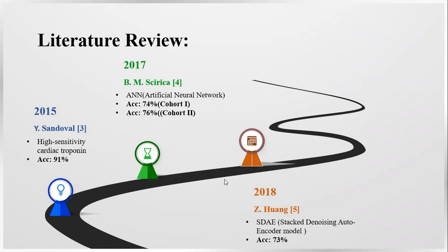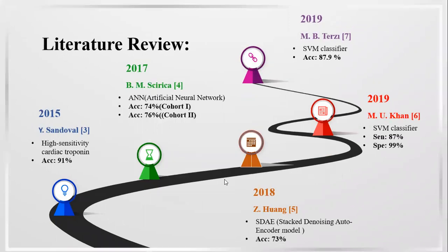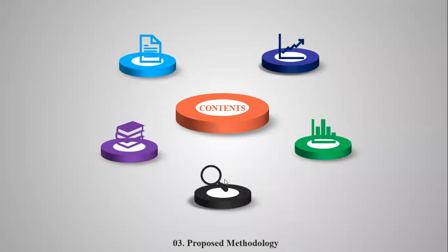In 2018, stacked denoising autoencoder model was used that led to an accuracy of 73%. In 2019, researchers used SVM classifier for the detection of ACS signals and attained the sensitivity of 87% and specificity of 99%. Also in 2019, SVM classifier was used with a classification accuracy of 87.9%. Now let's talk about the methodology proposed by our research.